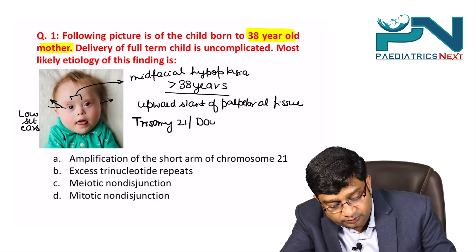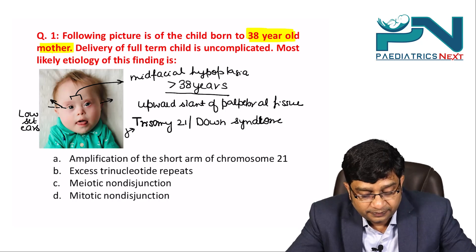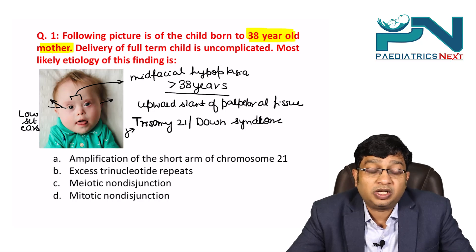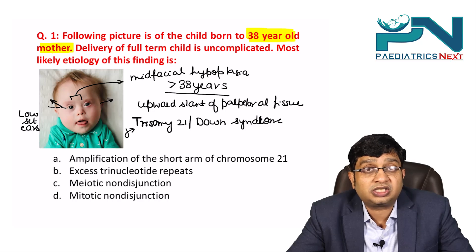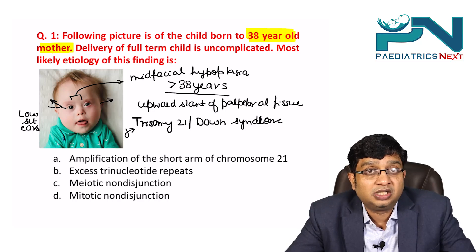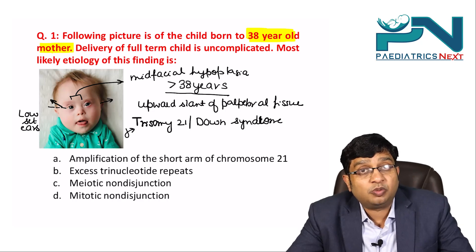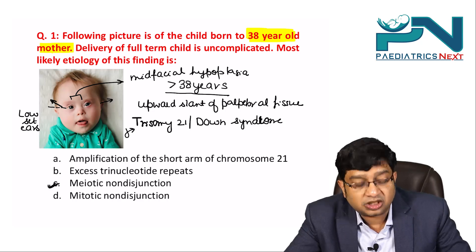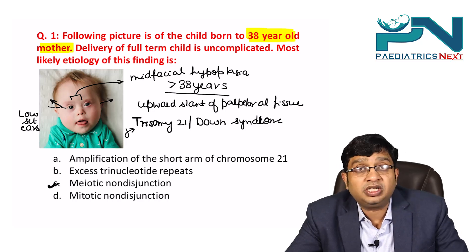All of these features make a presumptive diagnosis of Trisomy 21, that is Down syndrome. As the mother's age advances, the chances of non-disjunction — non-separation of chromosomes — increases. Most likely this is meiotic non-disjunction. The answer to question one is choice C.